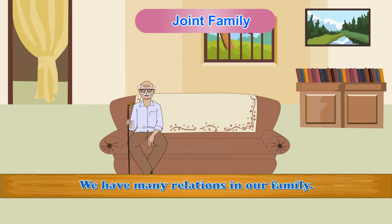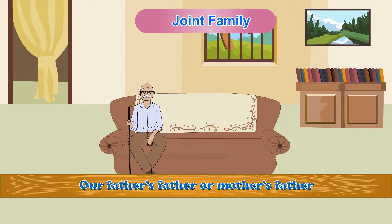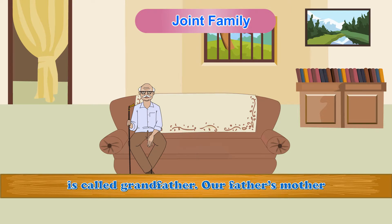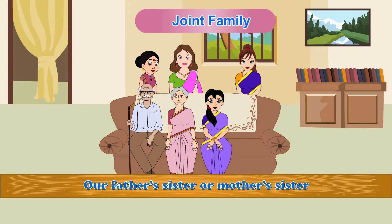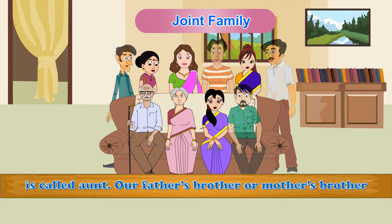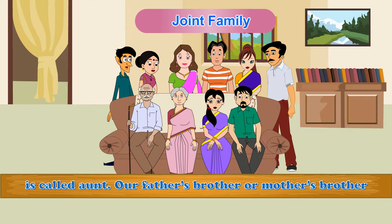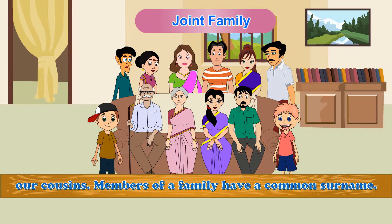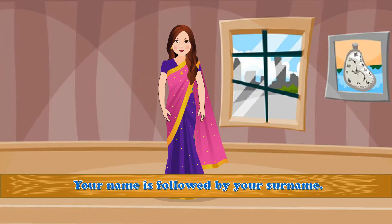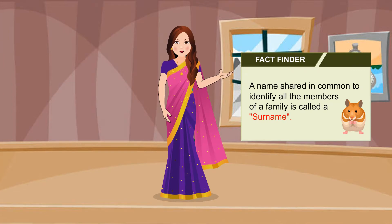We have many relations in our family. Our father's father or mother's father is called grandfather. Our father's mother or mother's mother is called grandmother. Our father's sister or mother's sister is called aunt. Our father's brother or mother's brother is called uncle. Our aunt's and uncle's children are our cousins. Members of a family have a common surname. Your name is followed by your surname. Fact Finder: A name shared in common to identify all the members of a family is called a surname.